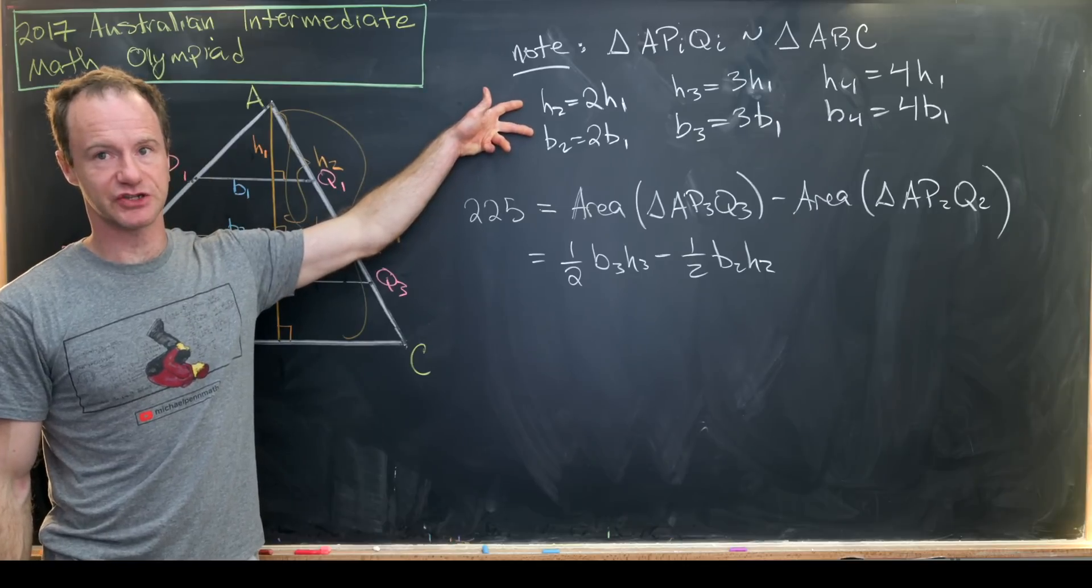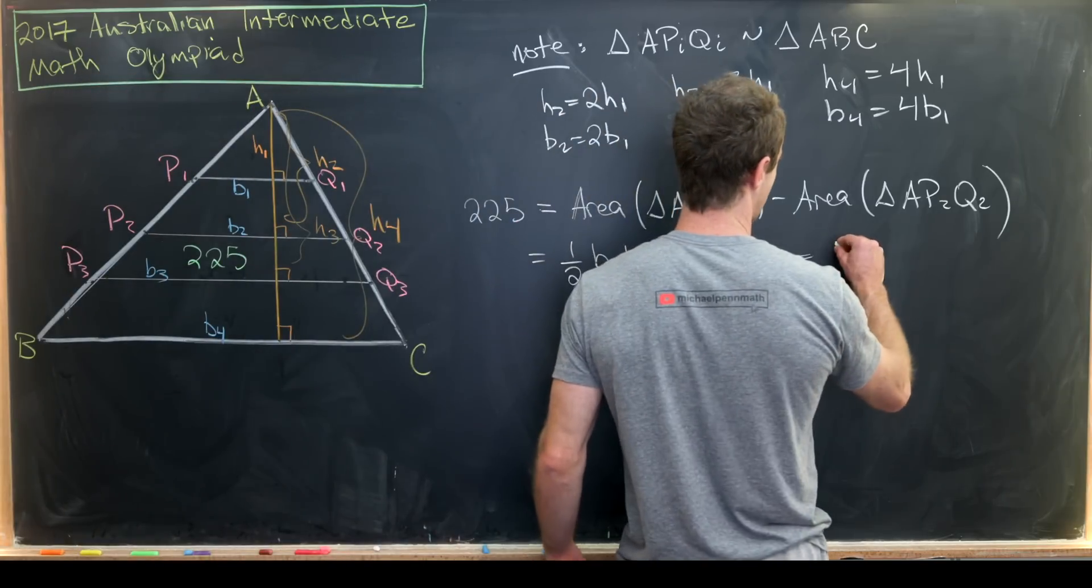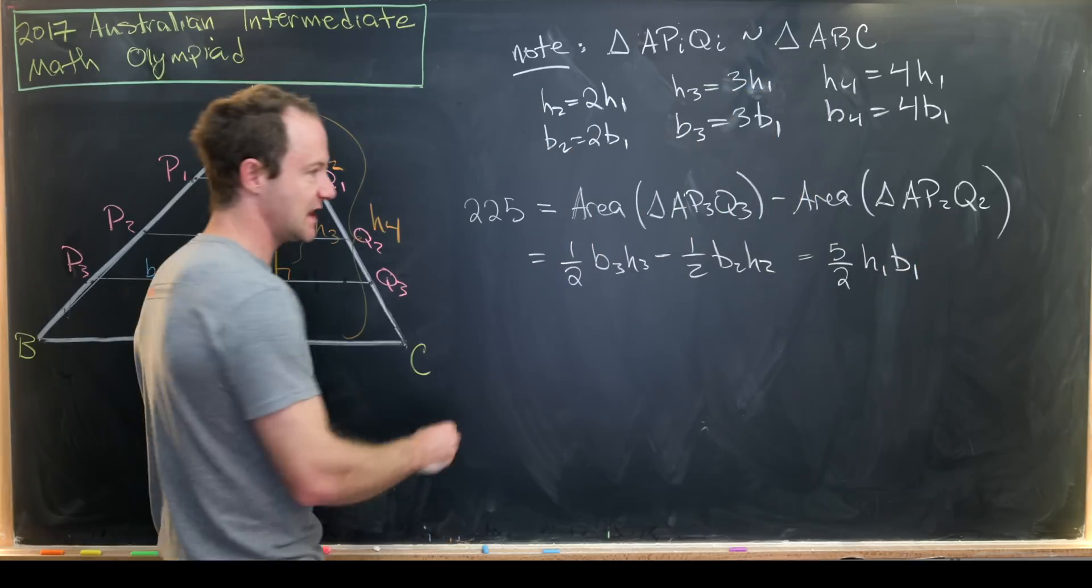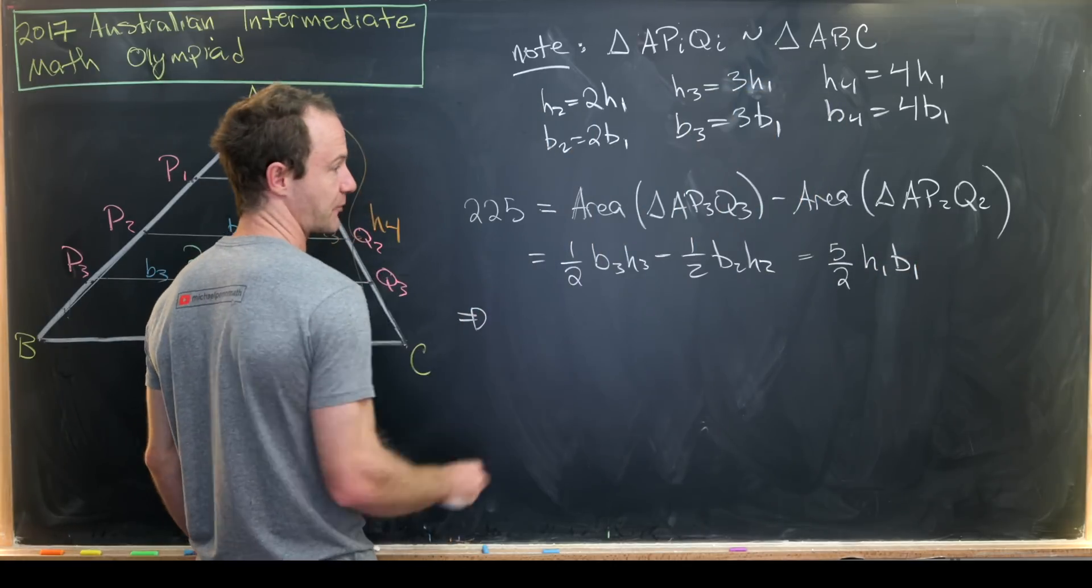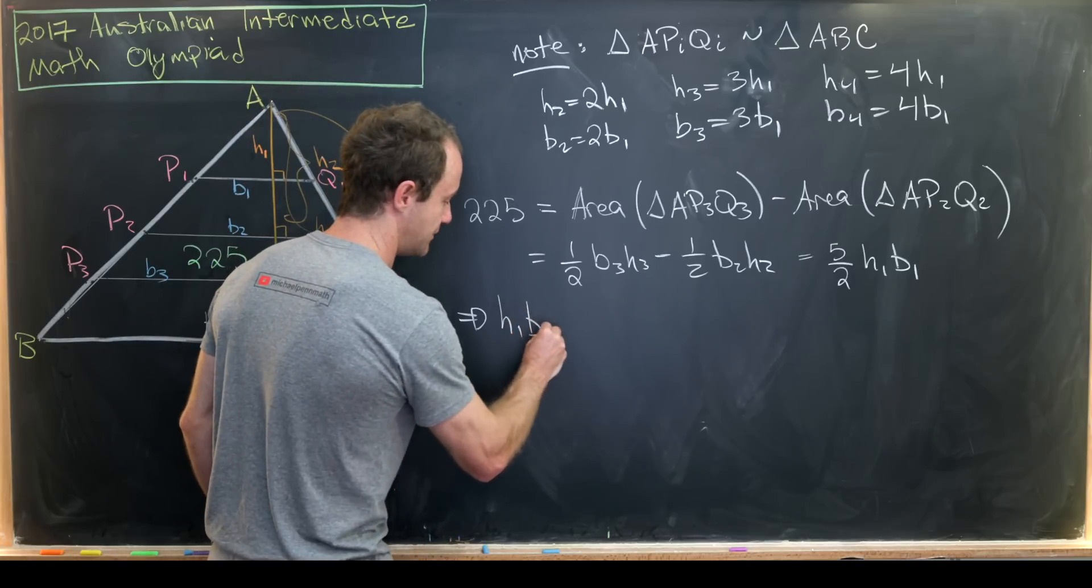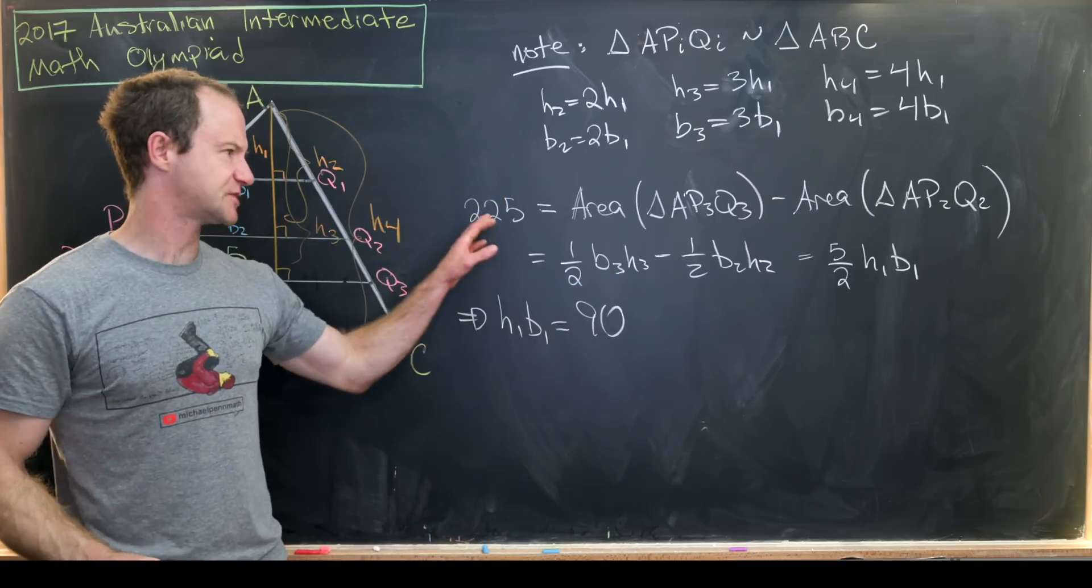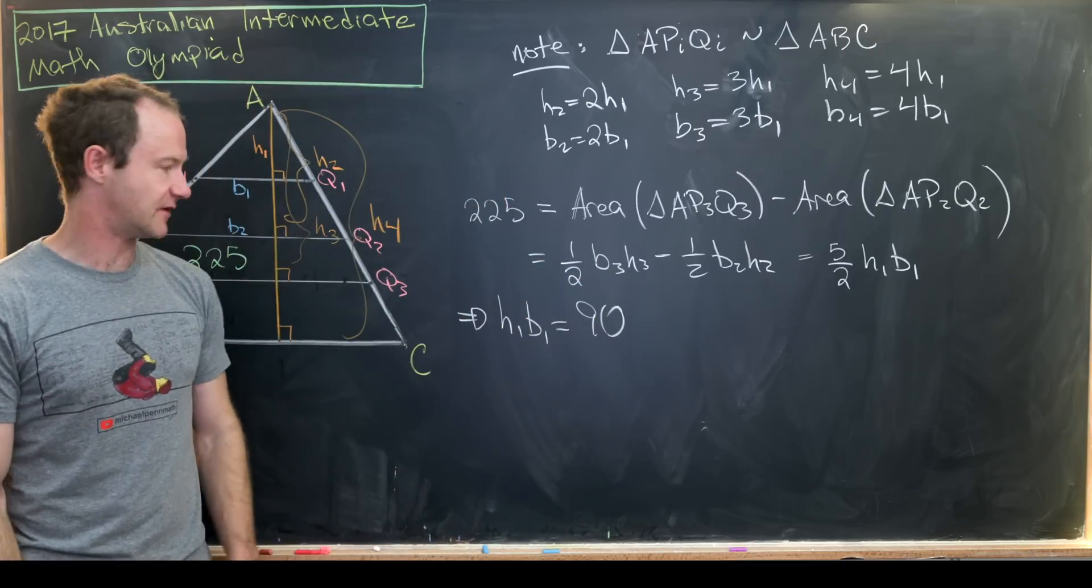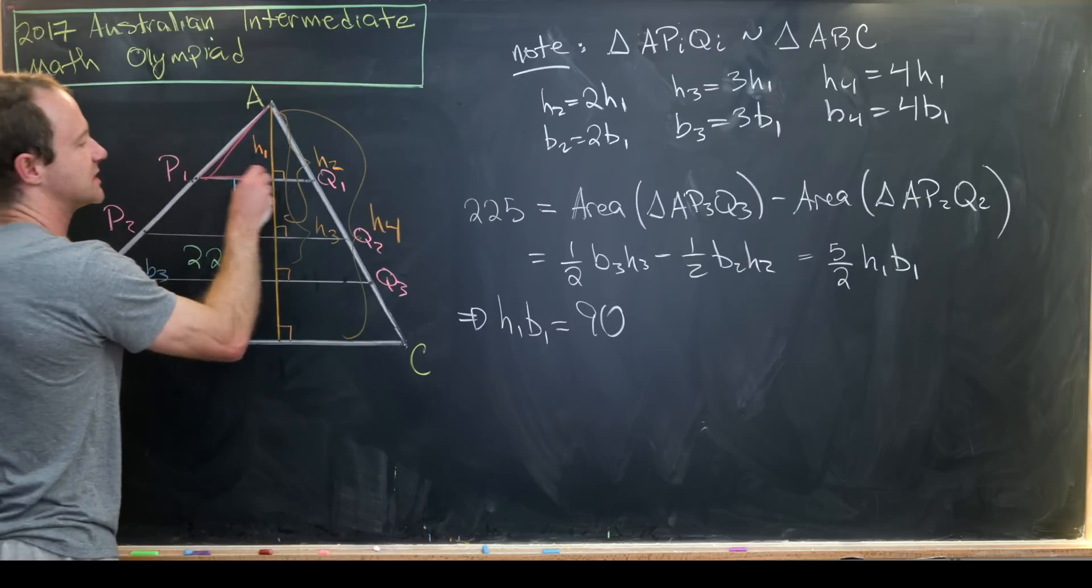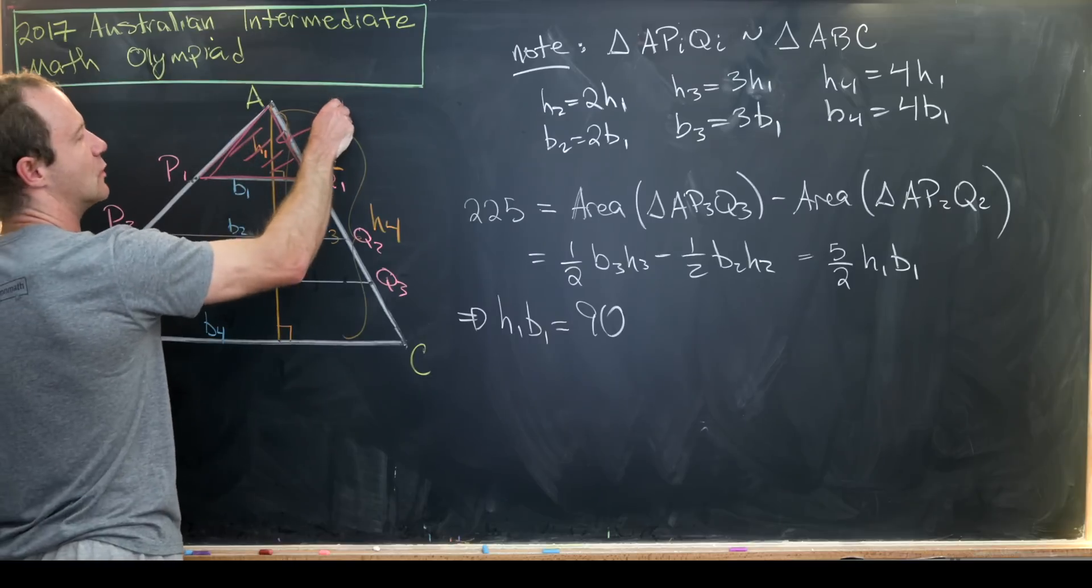But now using our similarity condition, we can put all of that in terms of H1, B1, and this boils down to 5 over 2 H1B1. But then that gives us a value for the product of H1B1. So we can easily calculate that H1B1 is in fact equal to 90. And we get that just by multiplying by 2 and dividing by 5. But H1 times B1 equals 90 means that the area of this smallest triangle up here is equal to 90 over 2 or 45.